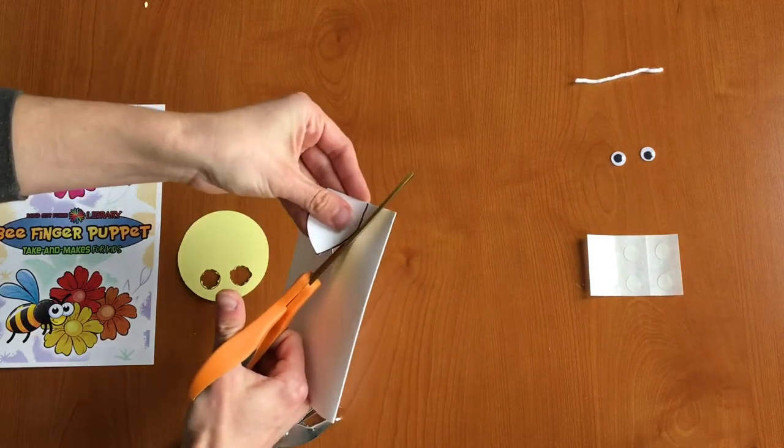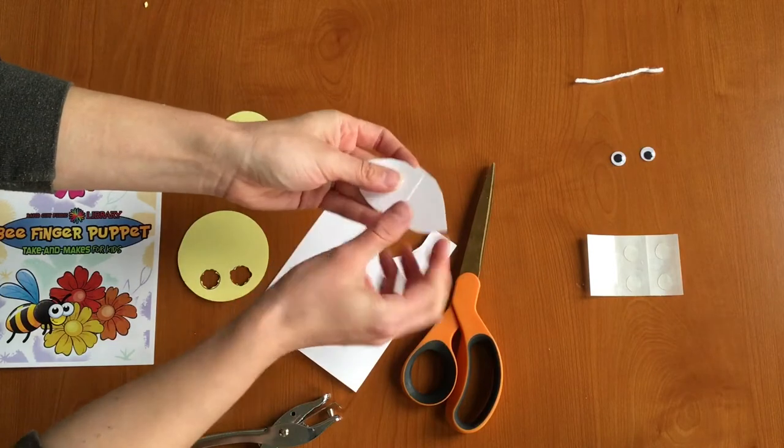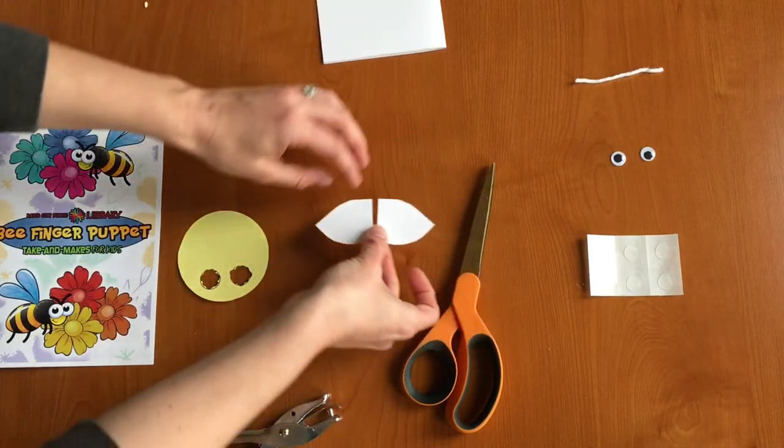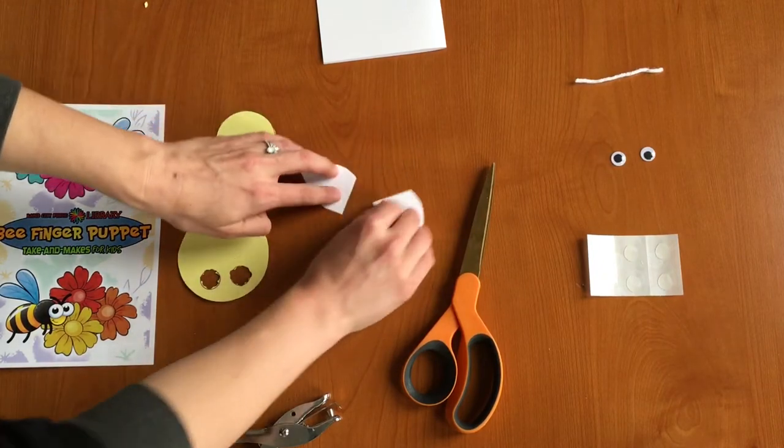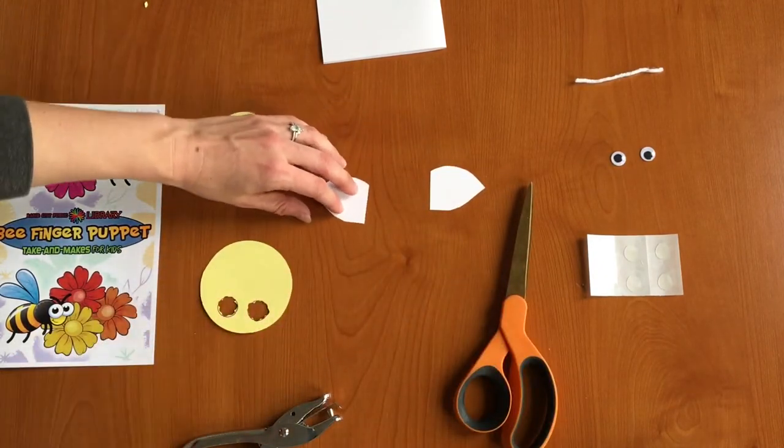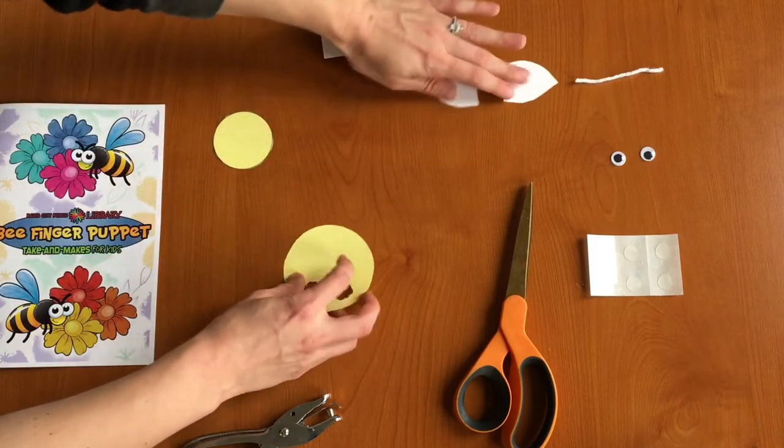So let me finish cutting. And we have one, two wings that are the exact same on both sides. Great. All right, so our next step is to draw black stripes on our body of our bee.